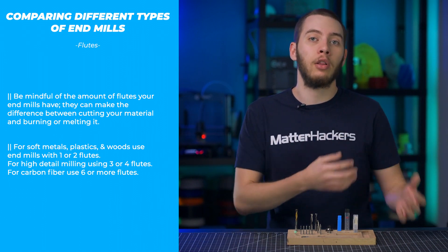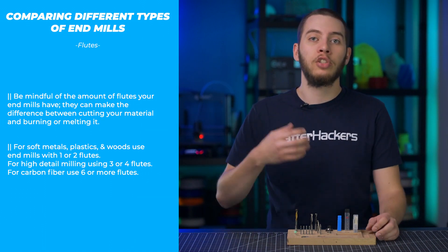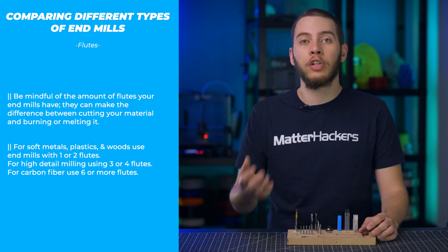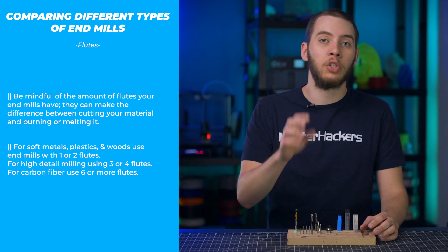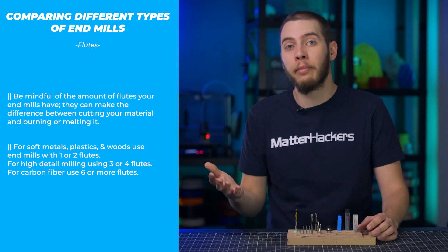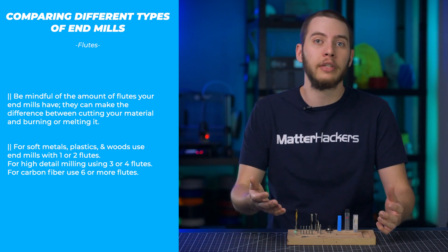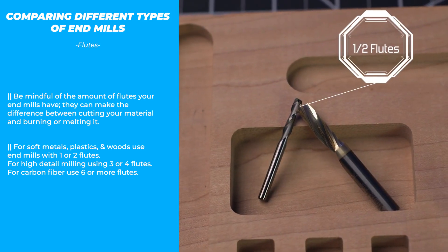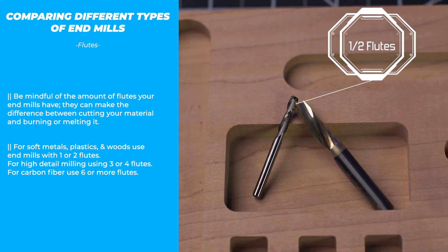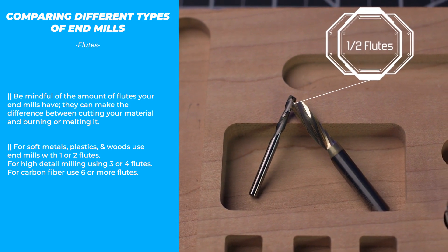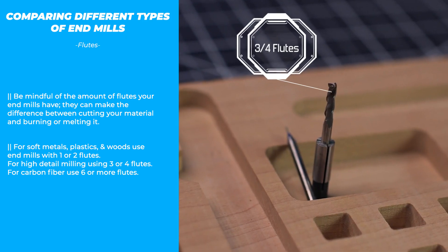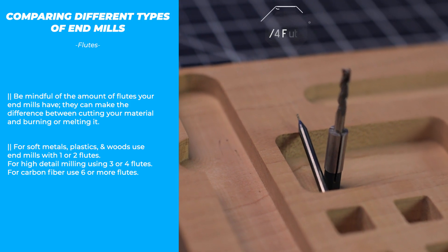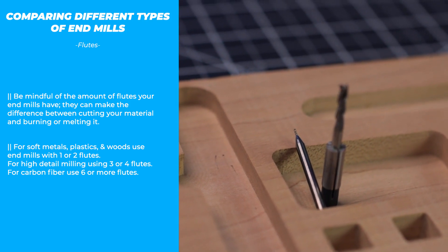Using that same end mill on aluminum is going to generate so much heat you run the risk of friction welding aluminum chips to your end mill, ruining both the end mill and your workpiece. The guidelines for soft metals, plastic, and woods is to use one or two flutes. For high-detail milling, use three or four flutes, and for carbon fiber, six or more flutes.